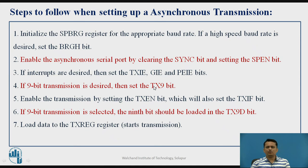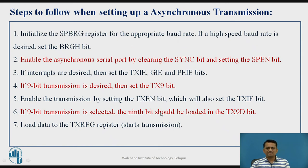Sometimes instead of transmitting 8-bit data you may go for 9-bit transmission. For the 9th bit you want to transmit, you have to set the TX9 bit to enable 9-bit transmission. Whatever 9th bit value you load into TX9D will be transmitted as the 9th bit. After following all these steps, whatever byte of data you want to transmit must be loaded into the TXREG register, and this will start the transmission.